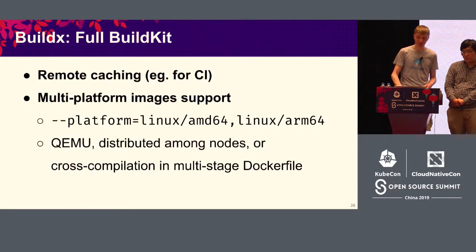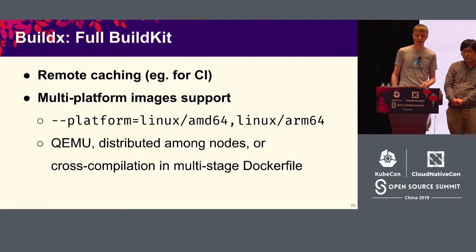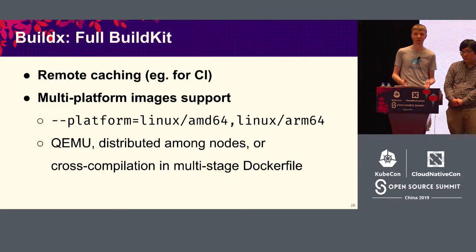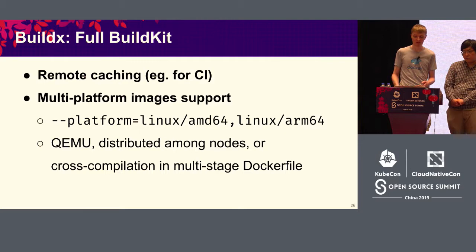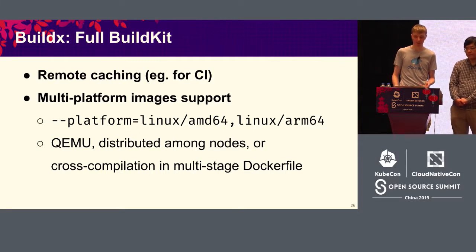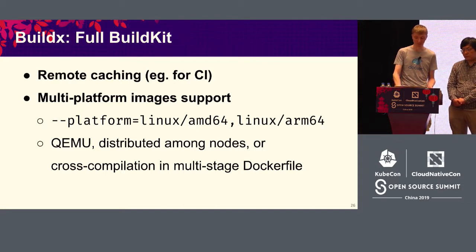Because BuildX uses full BuildKit, we can do some extra features that we can't do with the Docker integration yet. For example, we can do remote caching. This is very important for CI — when your build starts on a fresh machine, it doesn't have the local cache anymore. So now you can connect it to an external cache source and still get much faster builds.